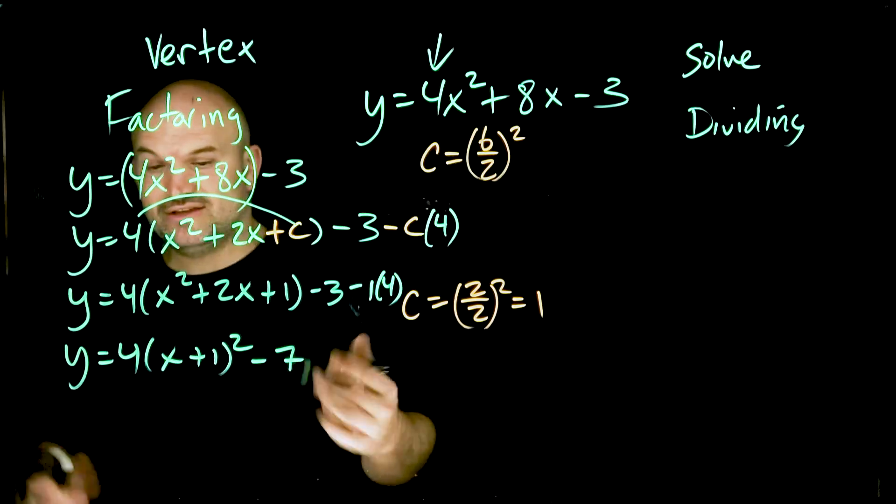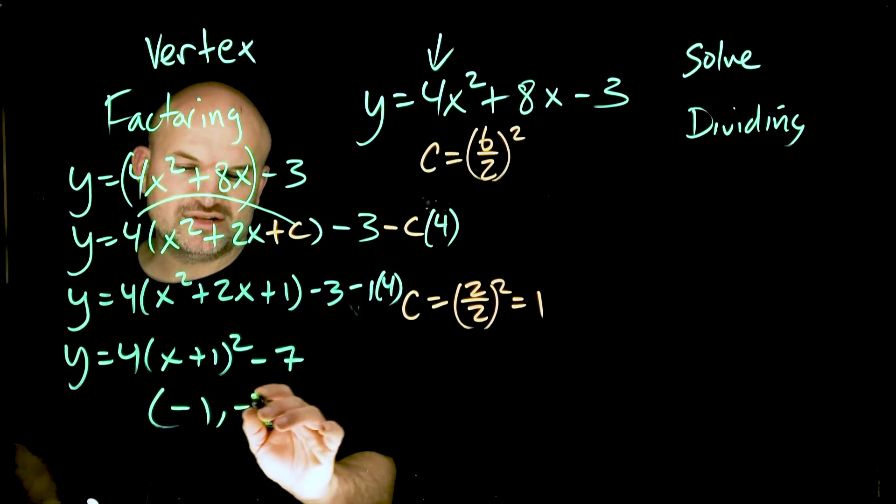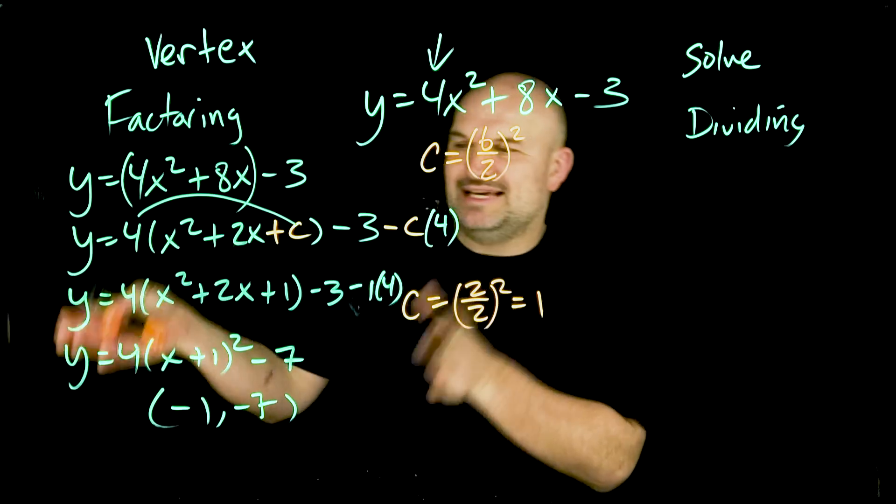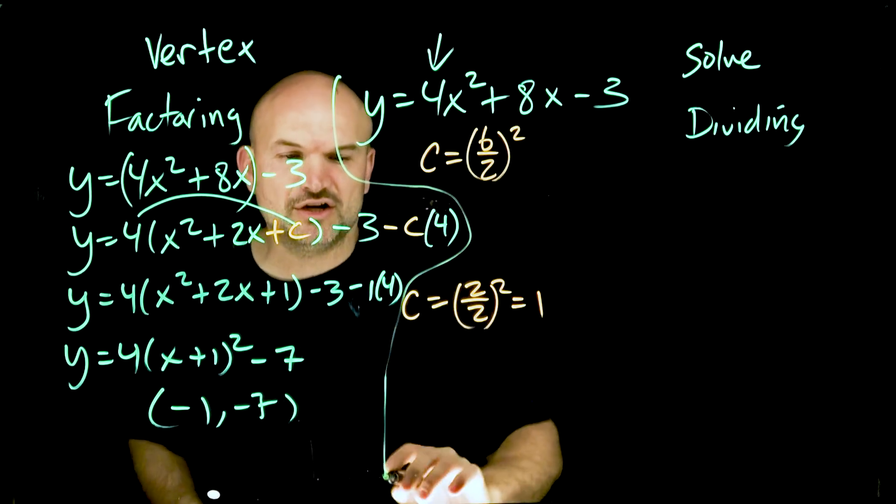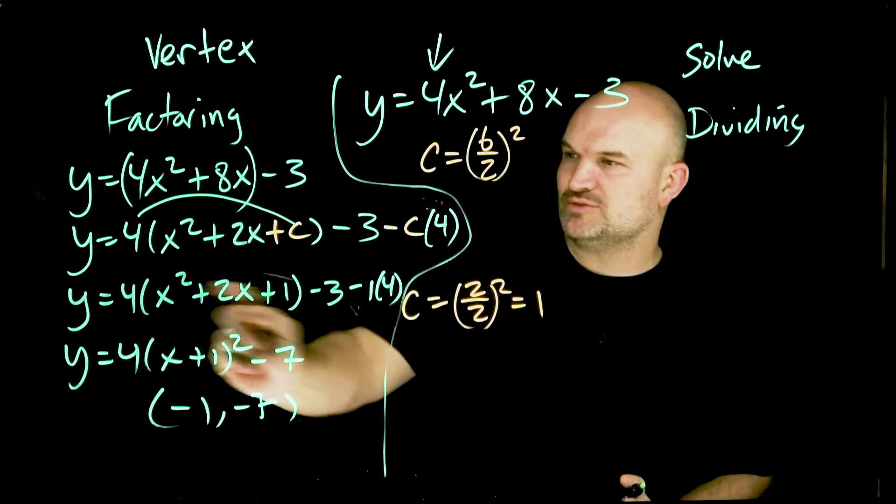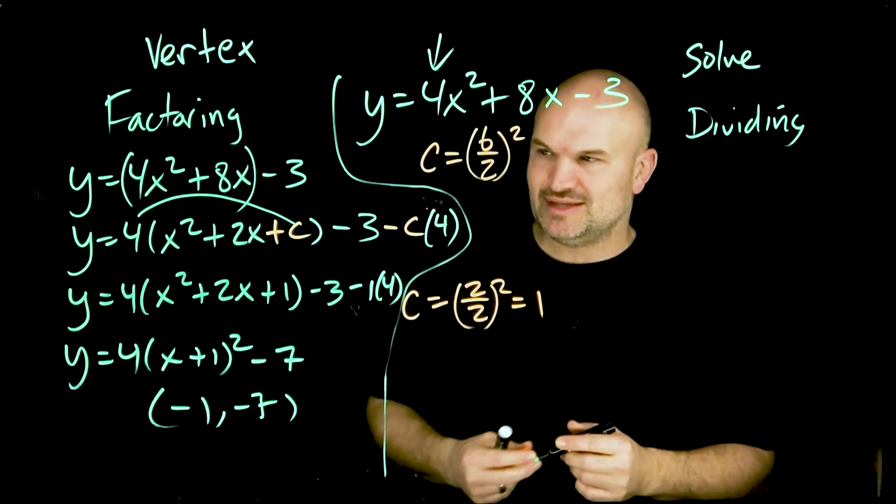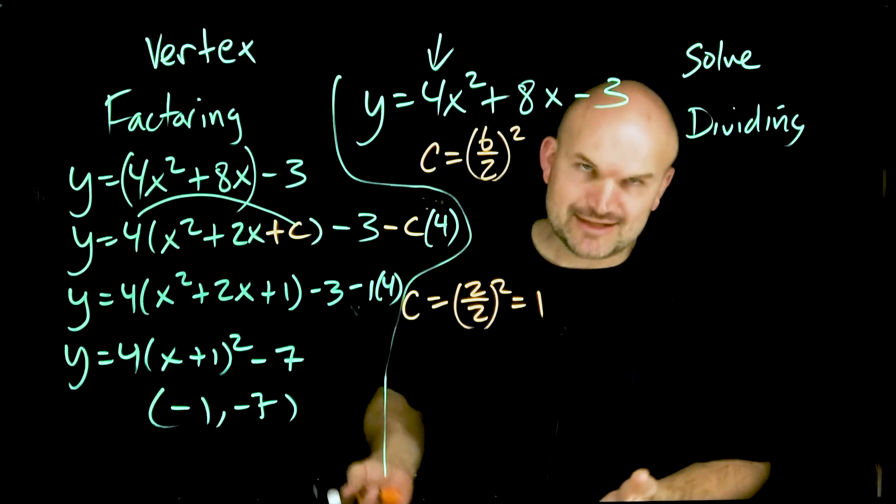So what I'm doing is I'm looking for the exact same number multiplied by itself that's going to give me one and then add to give me two. Hopefully you recognize that's x plus one. And you can see here negative four times one is negative four. Negative three minus four is negative seven. So if we were identifying the vertex, it's negative one, negative seven.